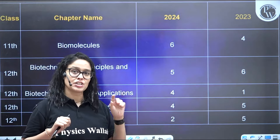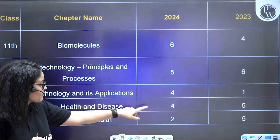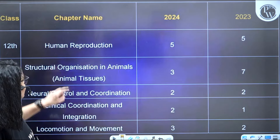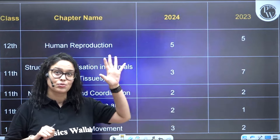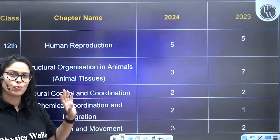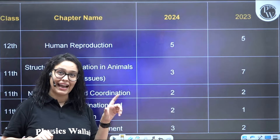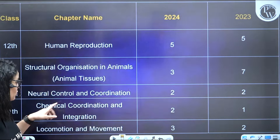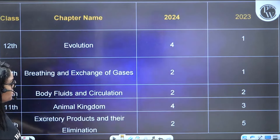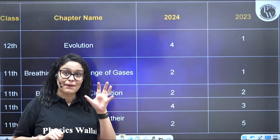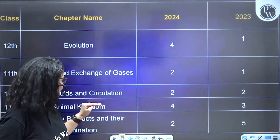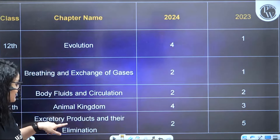Biotechnology and its application — on average three to four questions. Human health and diseases — four to five questions in the last two years. Reproductive health — two to five questions, on average three. Human reproduction — very important chapter, on average five questions. Structural organization in animals — three to seven questions. Neural control and coordination — one to two questions on average, but since digestion and absorption has been deleted, more questions are now coming from the remaining chapters.